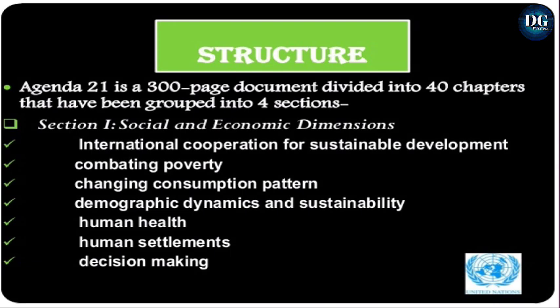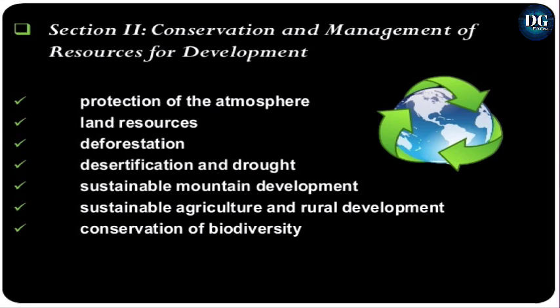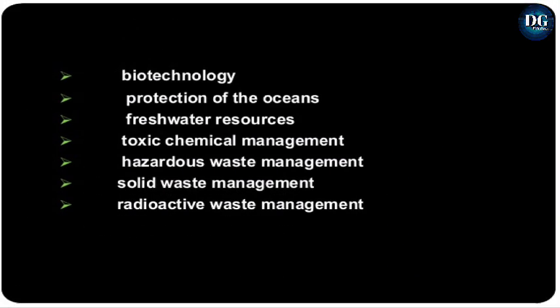Agenda 21 is a 300-page document divided into 40 chapters grouped into four sections. Section 1 deals with social and economic dimensions, like international cooperation for sustainable development, combating poverty, changing consumption patterns, demographic dynamics and sustainability, human health, human settlements, and decision making. Section 2 deals with conservation and management of resources for development, including protection of the atmosphere, land resources, deforestation, desertification and drought, sustainable mountain development, sustainable agriculture and rural development.